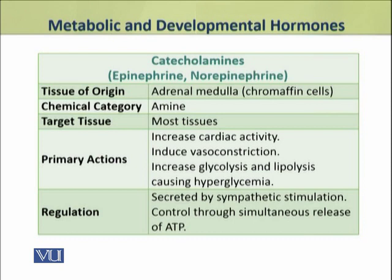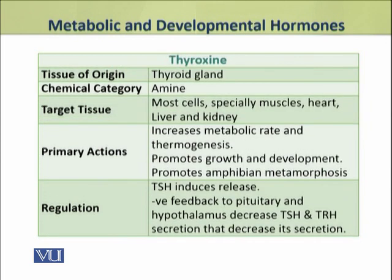As a result, catecholamines cause hyperglycemia. Their secretion is stimulated by sympathetic stimulation. Another major metabolic hormone is thyroxine, produced by the thyroid gland. It is an amine hormone targeting most cells of the body, especially muscles, heart, liver and kidney. Its primary actions include increasing the metabolic rate and thermogenesis. It promotes growth and development and also promotes metamorphosis in amphibians. The thyroid stimulating hormone from the pituitary induces its release, while its secretion is controlled by negative feedback to the pituitary and hypothalamus, decreasing TSH and TRH secretions.